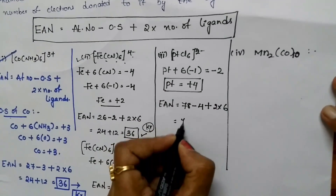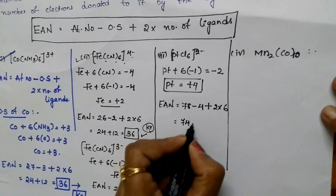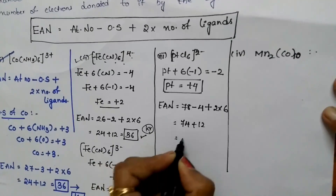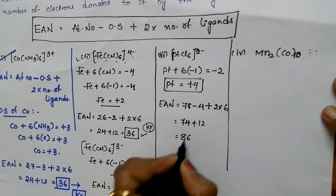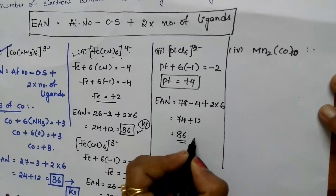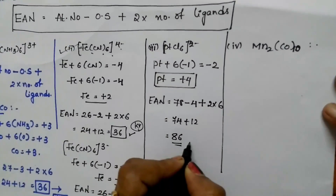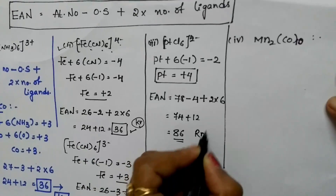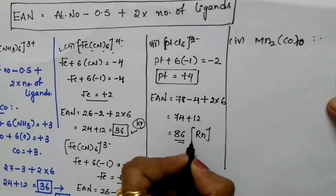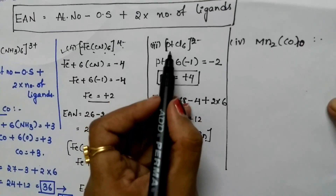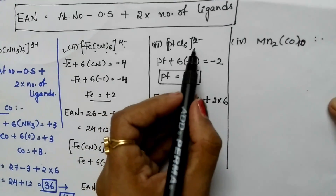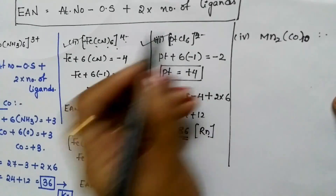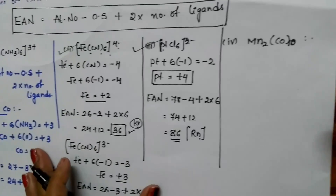74 plus 12 equals 86, which is the atomic number of noble gas radon. So PtCl6²⁻ is stable in nature.